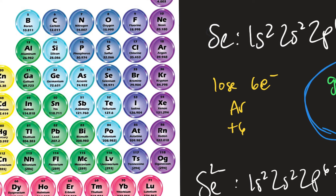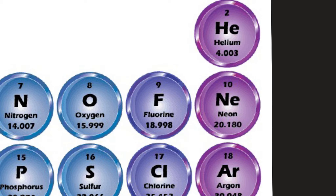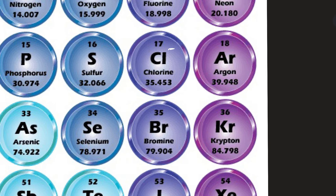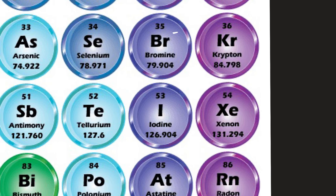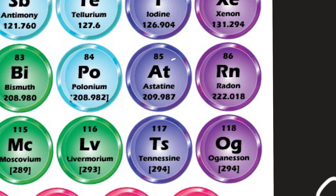Jumping to the other side of the periodic table, the halogens all have seven valence electrons. It's much easier to gain one more electron than to lose seven, so they all have a negative-one charge: fluoride, chloride, bromide, iodide, astatide, and tennessine — all negative-one.